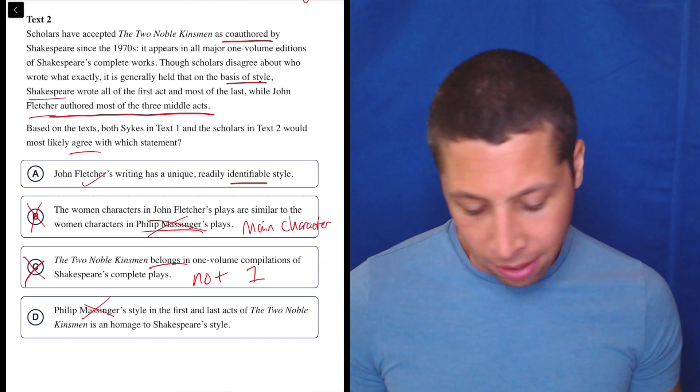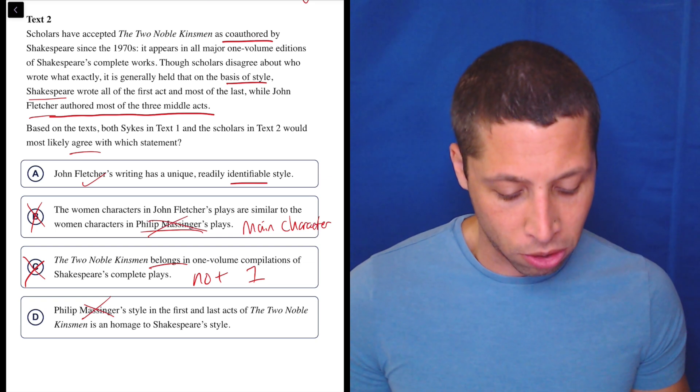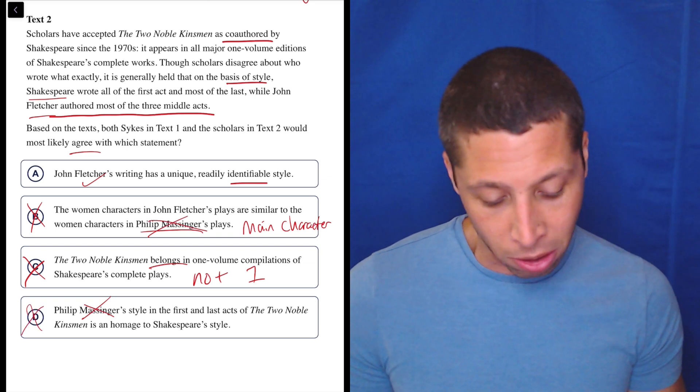Choice D: Philip Massinger's style in the first and last acts of The Two Noble Kinsmen is an homage to Shakespeare's style. Not a great sign. Again, this guy isn't mentioned in Passage 2, so main character issue.